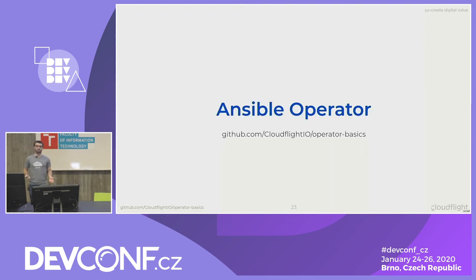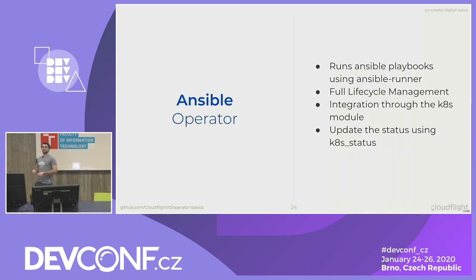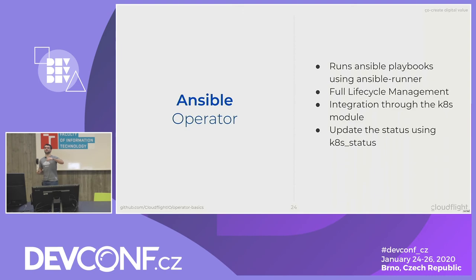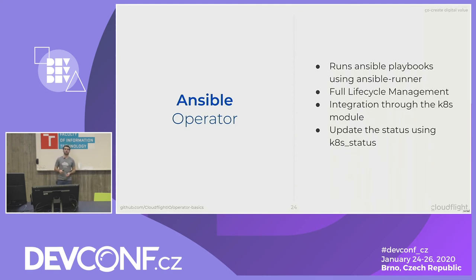The next operator is the Ansible operator. This is more advanced in that it can perform any action that Ansible can do, so you get full lifecycle integration. If you already know Ansible, you may already know modules you can use to enhance your operator. It runs Ansible playbooks using the Ansible runner. It supports full lifecycle management, meaning I can include hooks to scale a resource, and I can perform custom status updates — for example the Elasticsearch operator pre-populates the Elasticsearch resource with the server status so if the status changes to red you get this as a status report from the custom resource.